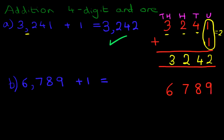6,789 plus one. We can label the columns, but we're not going to in this instance. What we're going to do is we're going to start, as we always do, by adding the column on the right-hand side first. That is the units column. So what is 9 plus 1?